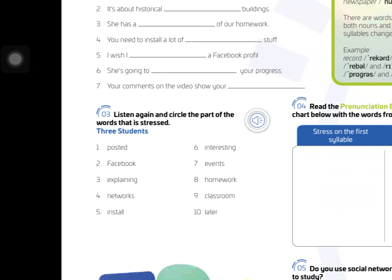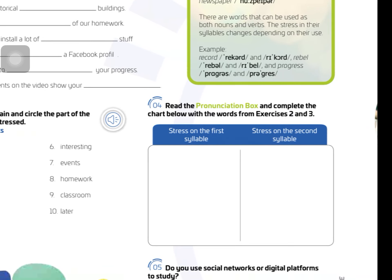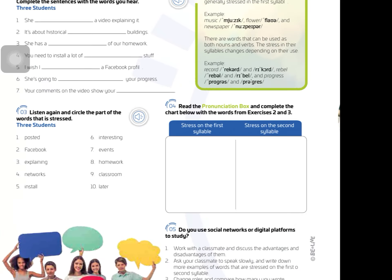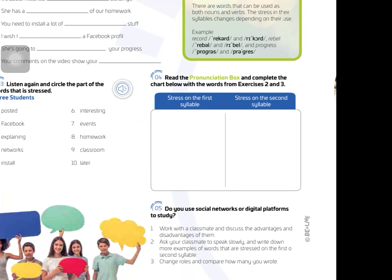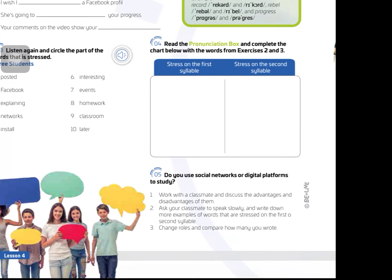Exercise 3: Listen again and circle the part of the words that is stressed. Three students. Check the pronunciation box and complete the chart below with the words from exercises 2 and 3 — stress on the first syllable and stress on the second syllable.